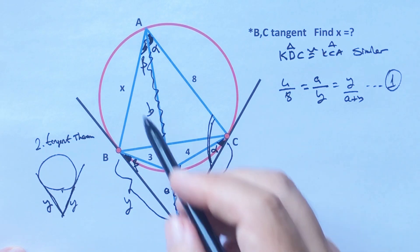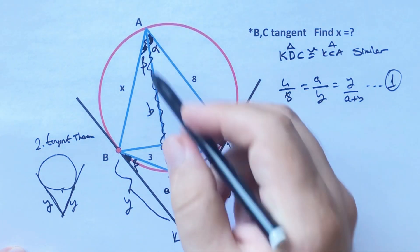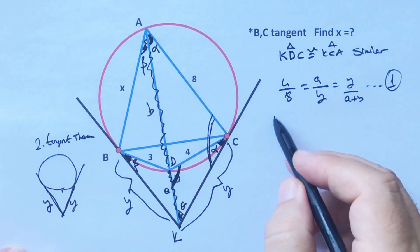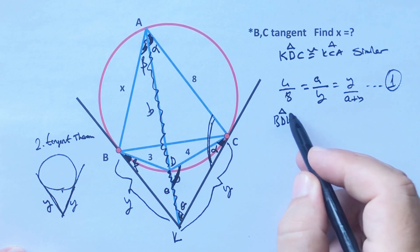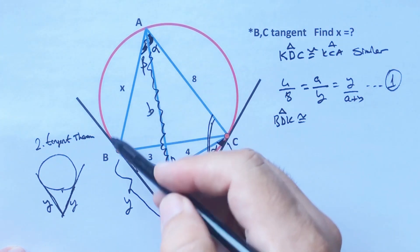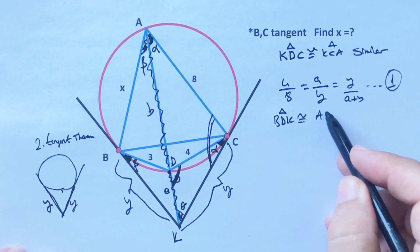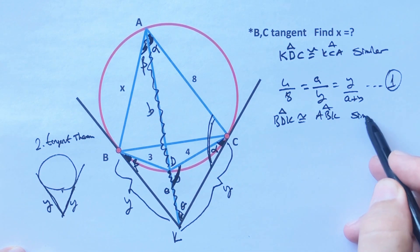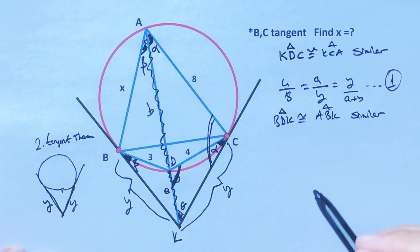And then for this triangle, here is D point, right? Okay, BDK triangle. These two triangles are similar, right? Therefore...